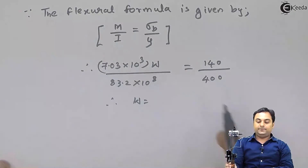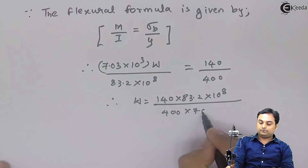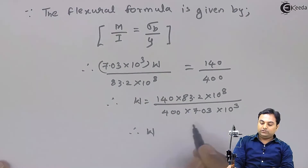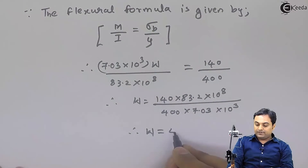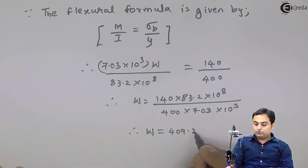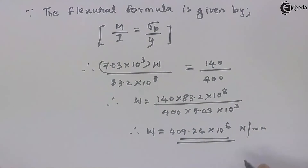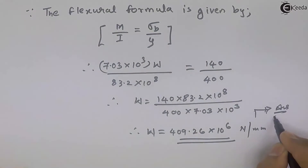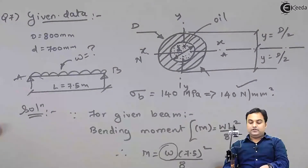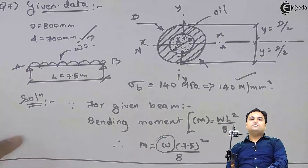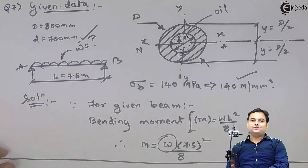Calculating all terms carefully, the answer for w comes out to be 409.26 × 10⁶ Newton per meter. This is our final answer — the intensity of UDL the pipe can carry. With this, we have completed 7 questions on the bending stresses topic. In the next lecture, we will see some more problems. Thank you.